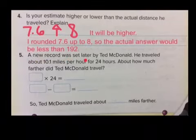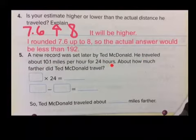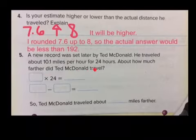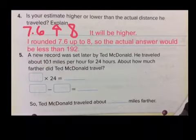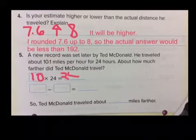A new record was set later by Ted McDonald. He traveled about 10.1 miles per hour for 24 hours. About how much farther did Ted McDonald travel? We're looking for a difference. 10.1 miles — this would be very easy to round down to 10. We have to realize that because we're rounding down, our answer is going to be less than the real answer. So 10 times 24 is 240.